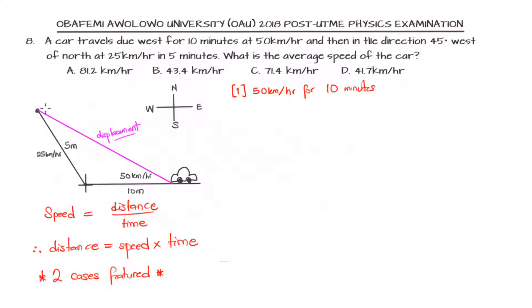For the first case when it's traveling at 50 kilometers per hour for 10 minutes, the distance will be speed multiplied by time. The speed is 50 kilometers per hour multiplied by the time which is 10 minutes. Now we have minutes and hours, we need to put them in the same units. This is where we are prone to make mistakes. So 10 minutes divided by 1, but we know that 60 minutes makes 1 hour.